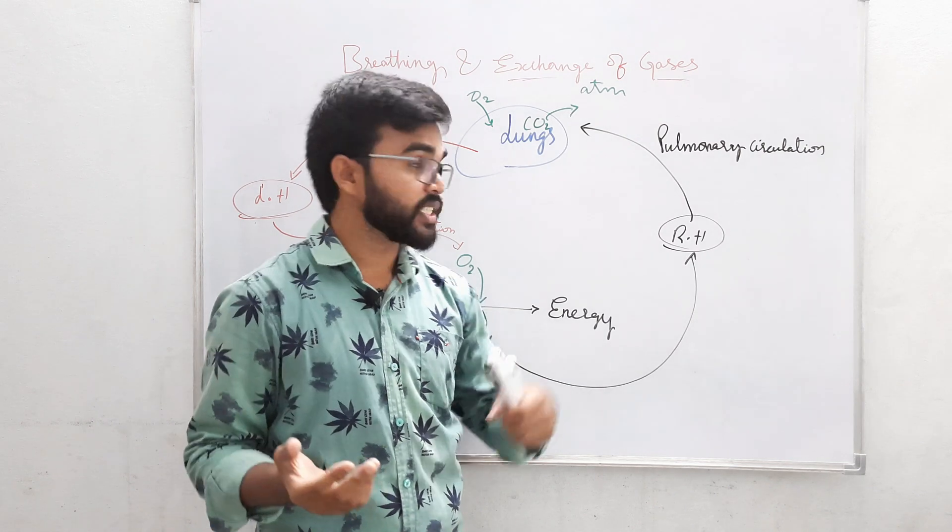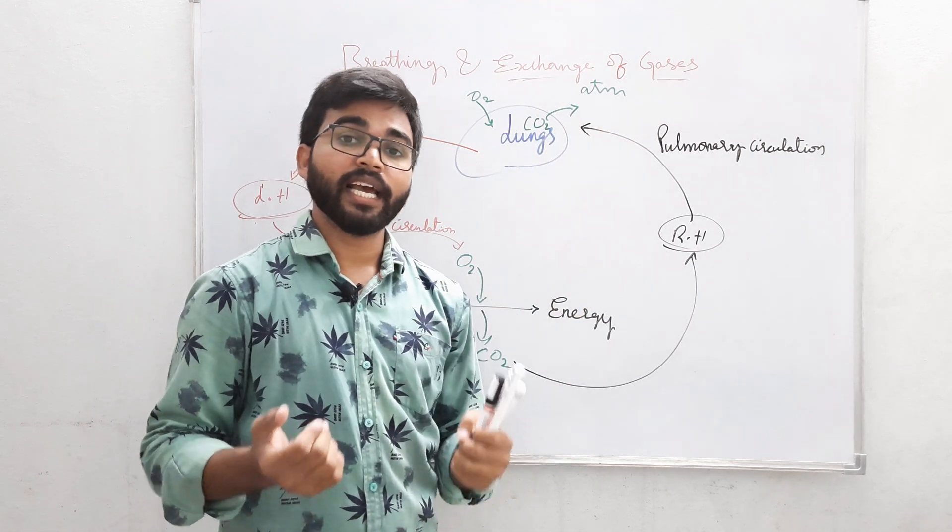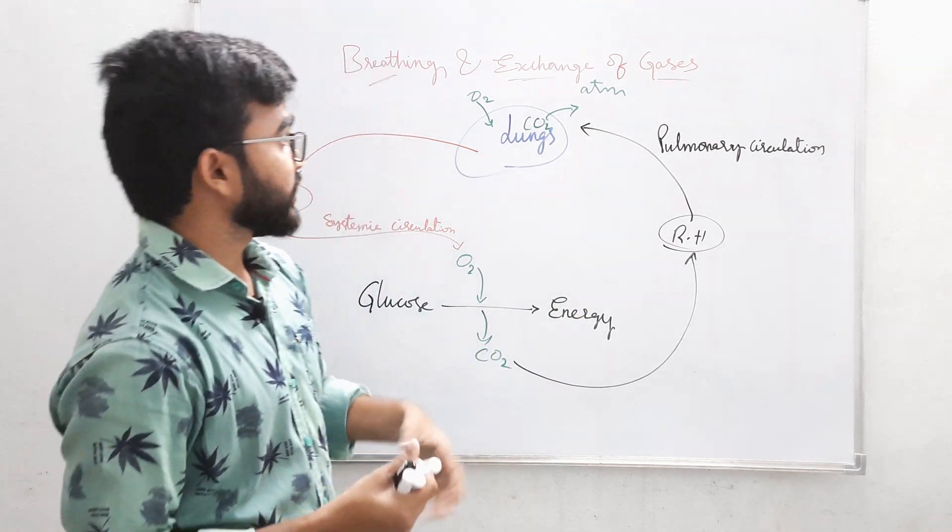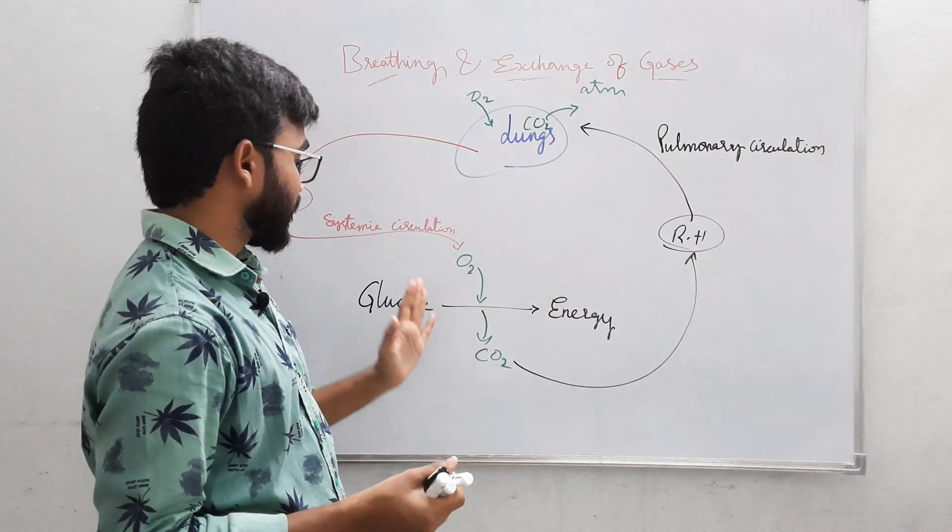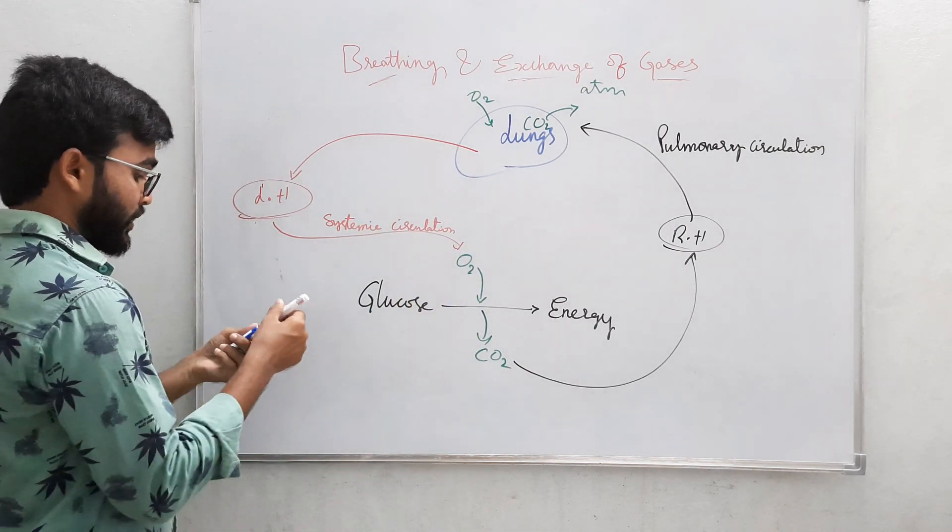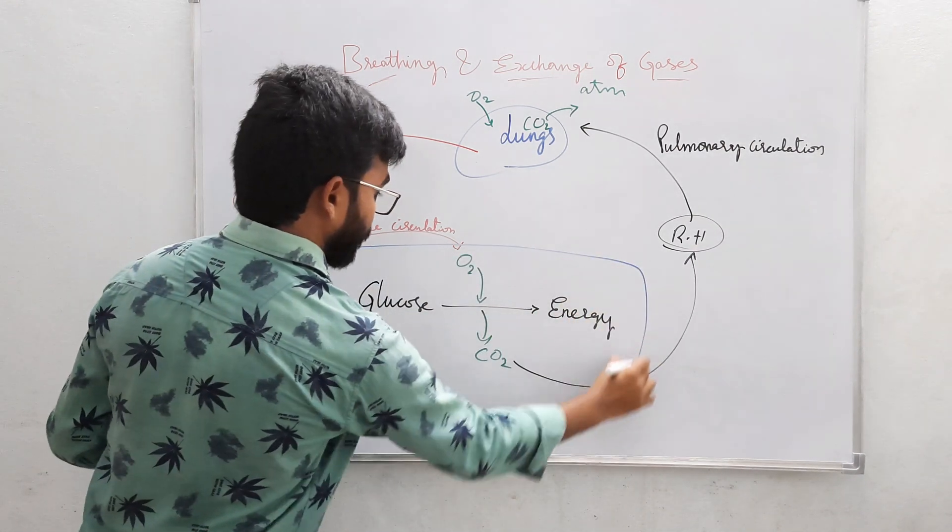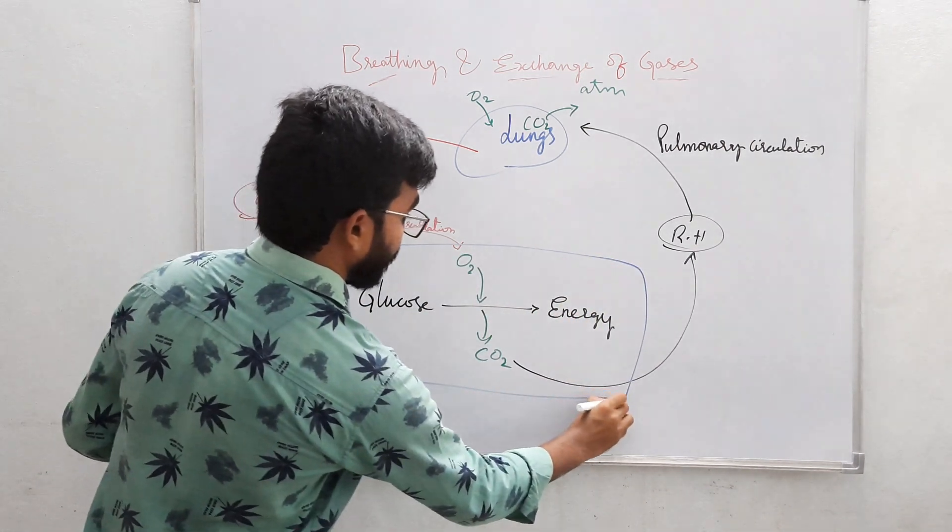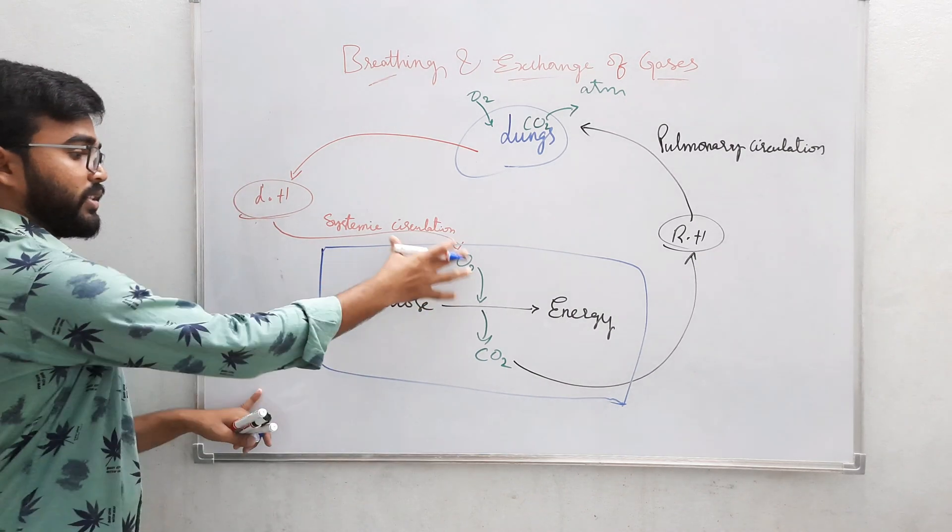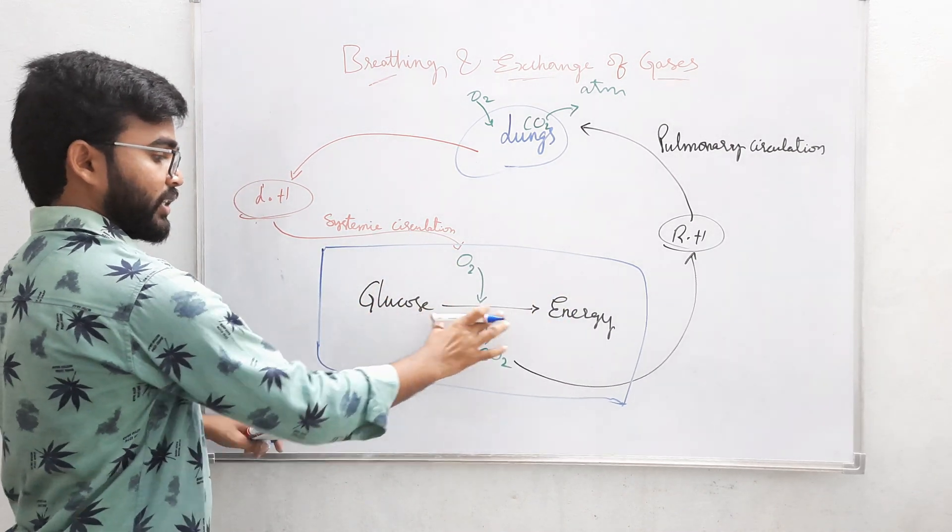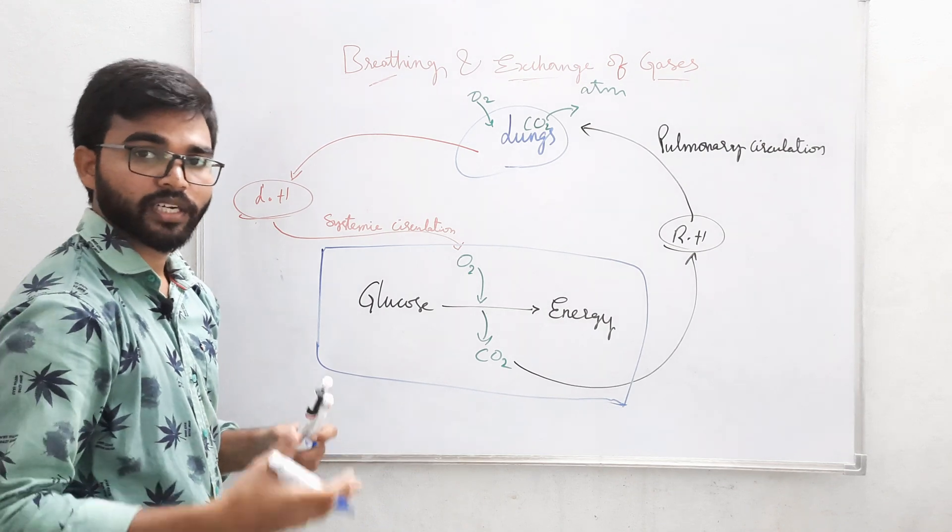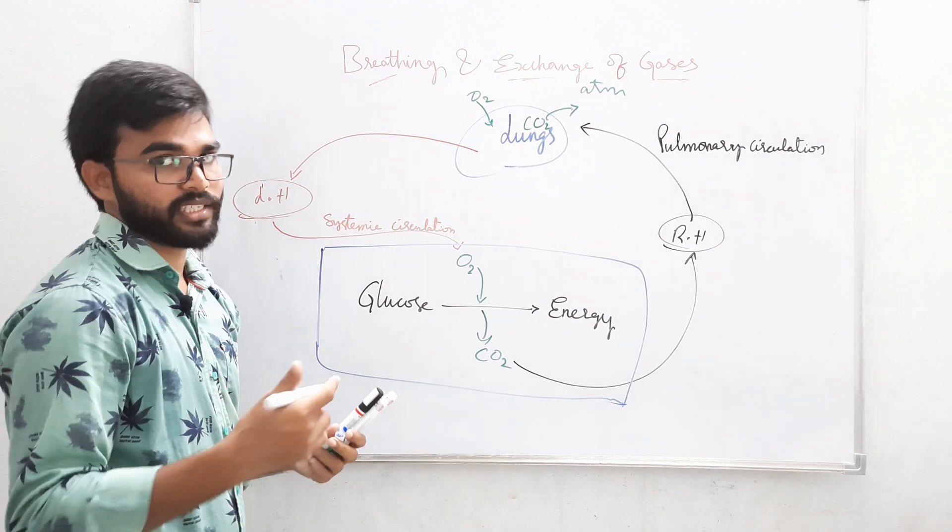And the blood from the heart to the lungs is pulmonary circulation. So this exchange of O2 and expiring of CO2 is called breathing. The gases are exchanged in the tissue. Everything creating energy will occur in the tissue as per the requirement of that organ or that tissue.